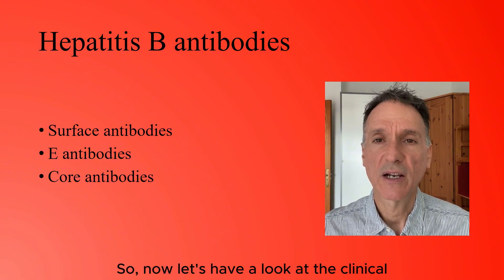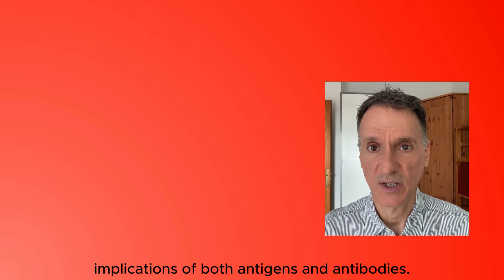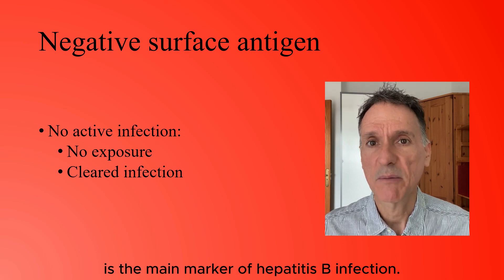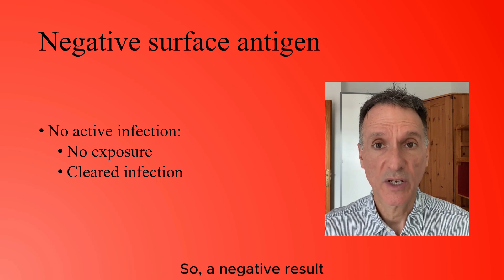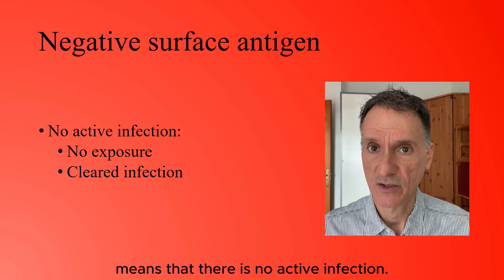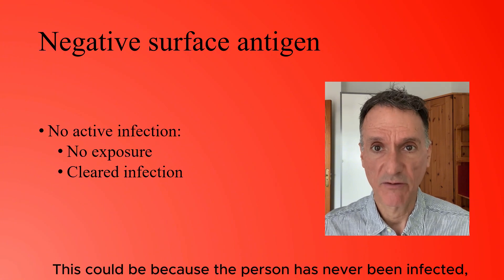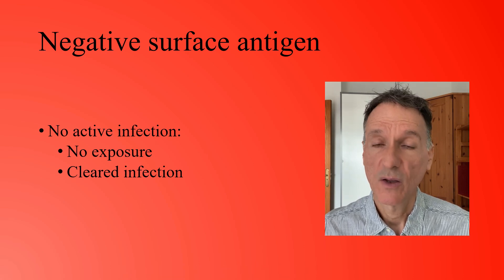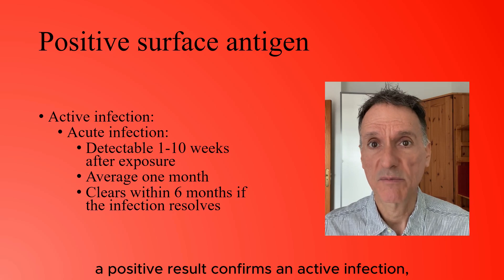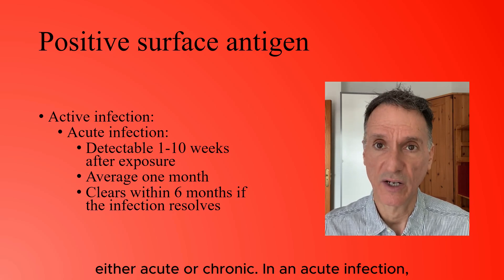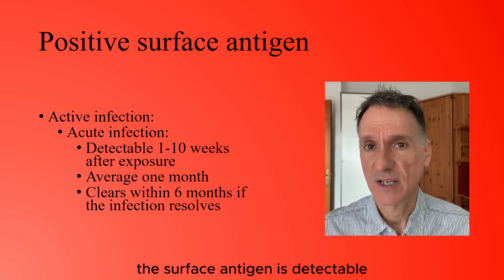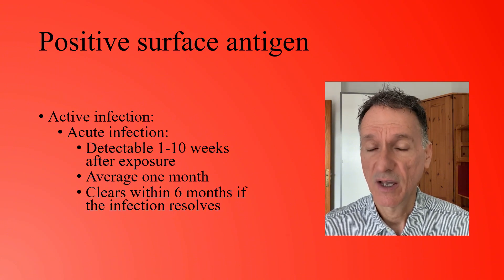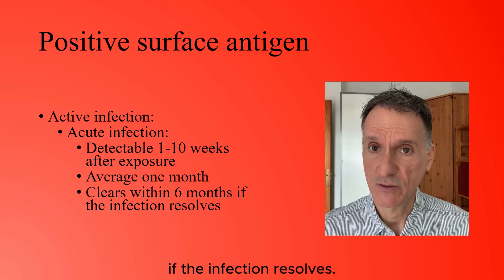Now let's have a look at the clinical implications of both antigens and antibodies. The hepatitis B surface antigen is the main marker of hepatitis B infection. A negative result means there is no active infection — either the person has never been infected or the infection has cleared after developing immunity. A positive result confirms an active infection, either acute or chronic. In an acute infection, the surface antigen is detectable one to ten weeks after exposure, with an average of one month, and it generally clears within six months if the infection resolves.